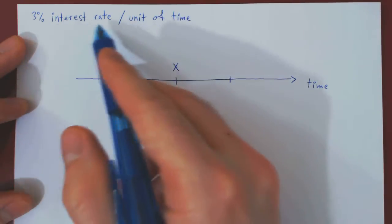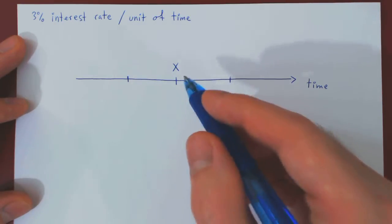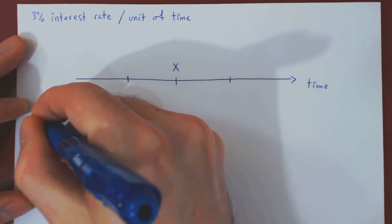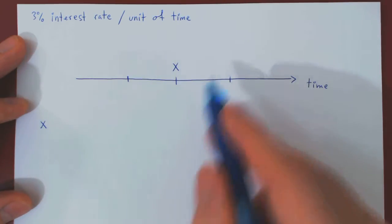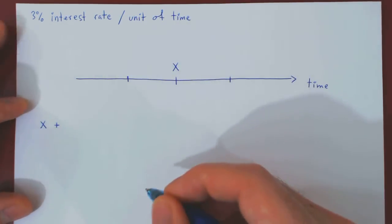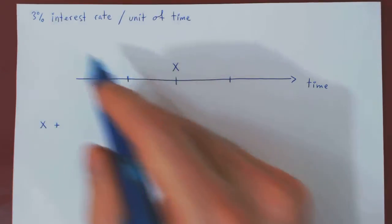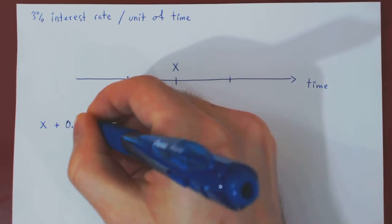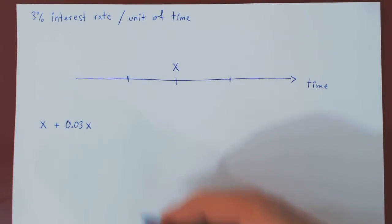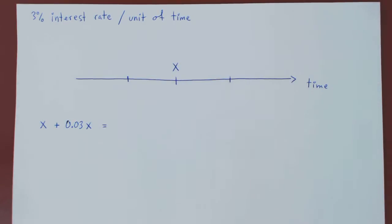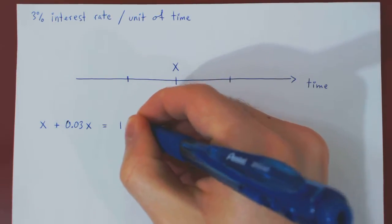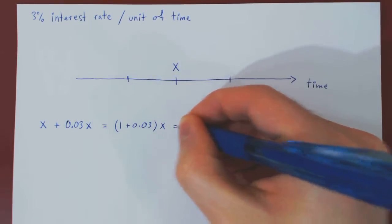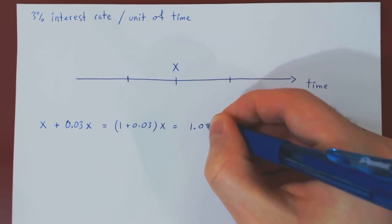Well, what is an interest rate? An interest rate means that over one period of time, you gain back your capital so X will remain as is, but you will gain to the original investment 3% of the investment. So 3% of X. Of course, we can factor X and write this simply as 1 plus 0.03 times X, which is quite simply 1.03X.